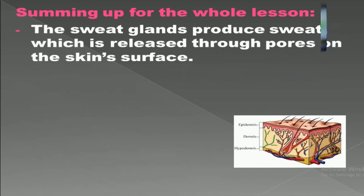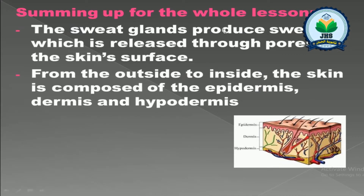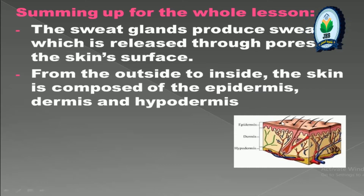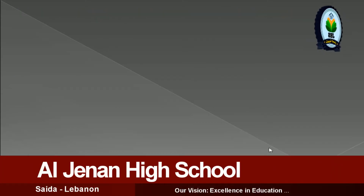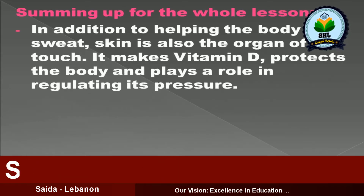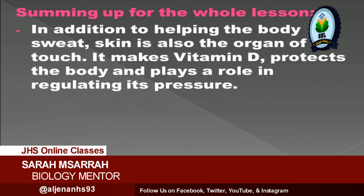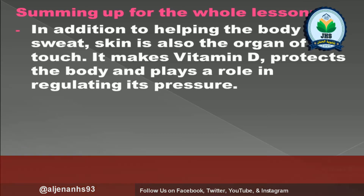The sweat glands produce sweat which is released through pores on the skin's surface. From the outside to the inside, the skin is composed of the epidermis, dermis, and hypodermis. In addition to helping the body sweat, the skin is also the organ of touch, it makes vitamin D, protects the body, and plays a role in regulating temperature and blood pressure.